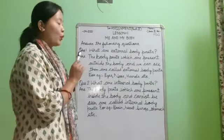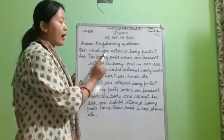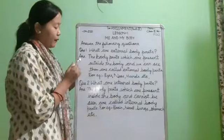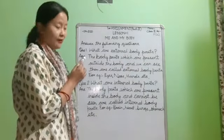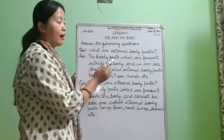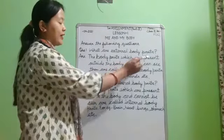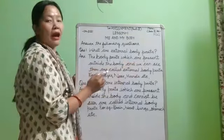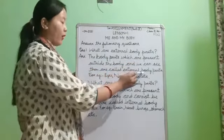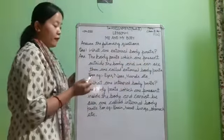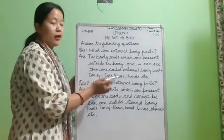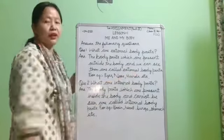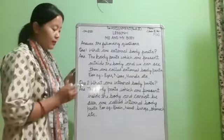Question 1: What are external body parts? Write 'Ans.' and the answer: The body parts which are present outside the body and we can see them are called external body parts. For example: eyes, nose, hands, etc.